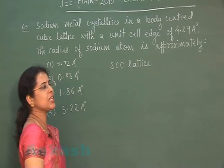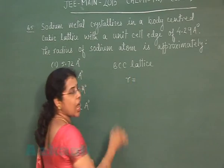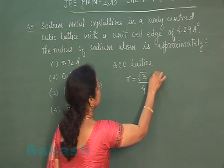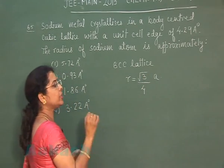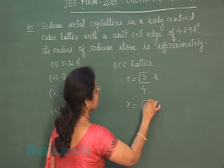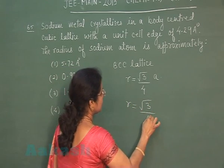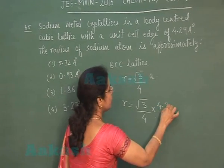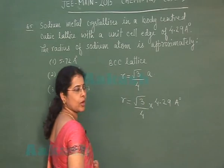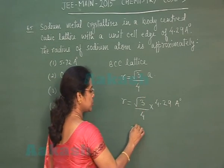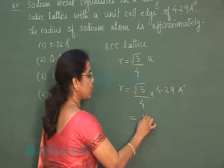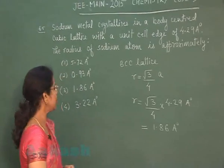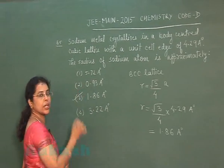For a BCC lattice, the radius and edge length are related by the expression r = (√3/4)a. The edge length of the unit cell is given as 4.29 Angstrom. Solving this, the radius comes out to approximately 1.86 Angstrom. So the third option is the correct answer.